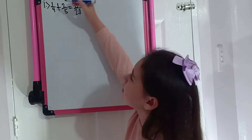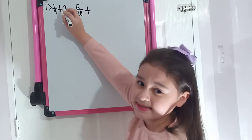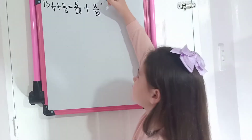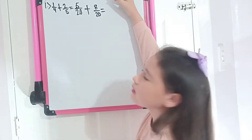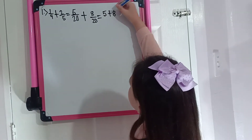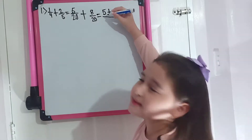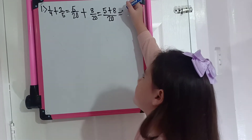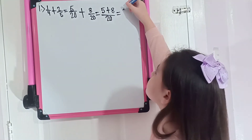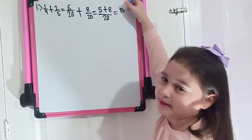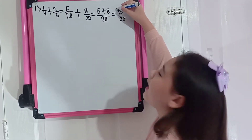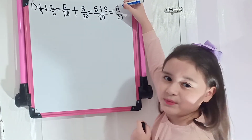And then let's multiply: 5 times 1 is 5, plus 4 times 2 is 8. Copy the denominator, which is 20. So 5 plus 8 over 20. 5 plus 8 is 13, copy the denominator. So our answer is 13 over 20.